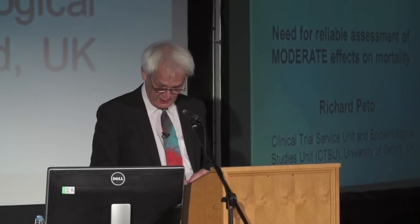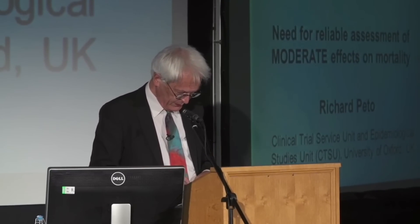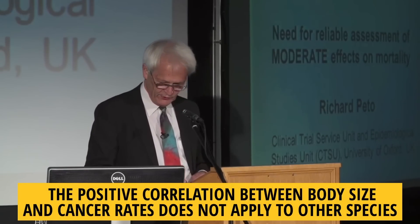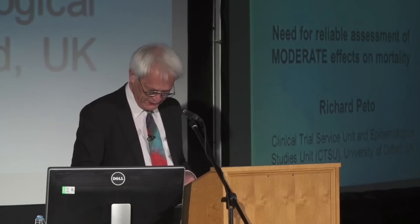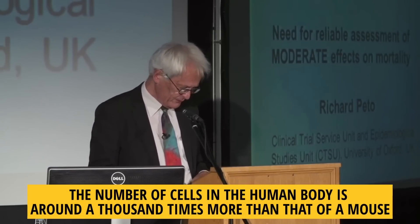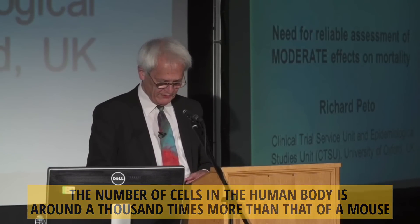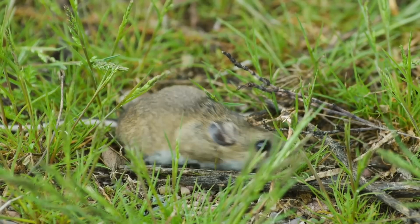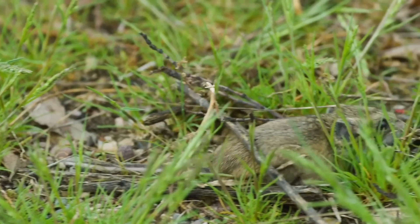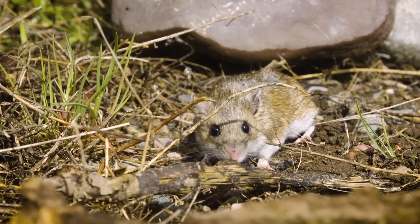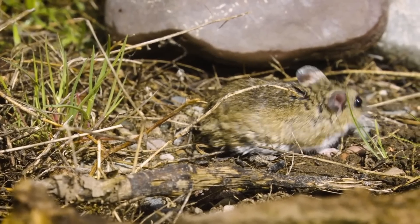But at the same time, Peto studied some cross-species cancer rates and found a very strange phenomena. The positive correlation between body size and cancer rates does not apply to other species. For example, comparing humans and mice, the number of cells in the human body is around a thousand times more than that of a mouse. According to the correlation, we would expect the cancer rate of a mouse to be a thousand times lower than a human because of the small body size. But in fact, the chances of cancer for humans and mice are practically the same.